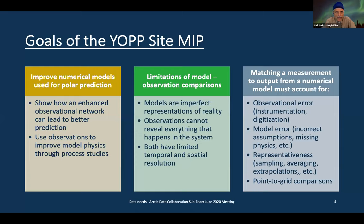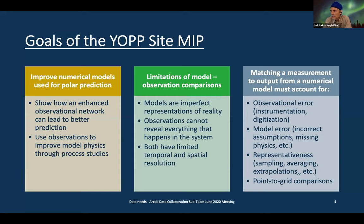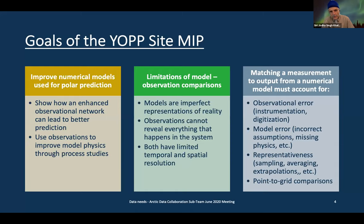The goals of the OPSITE NIP are to improve numerical models used for prediction, particularly in the Arctic but also globally, showing how an enhanced observational network can lead to better predictions, and using observations to improve model physics through process studies. There are recognized limitations in comparing observations with models on both ends that require particular attention.